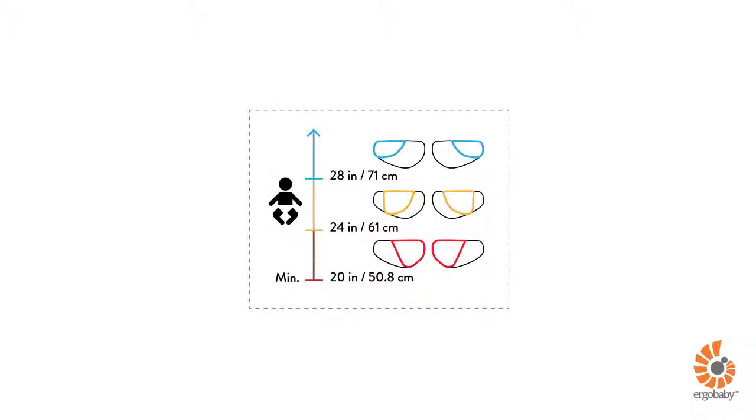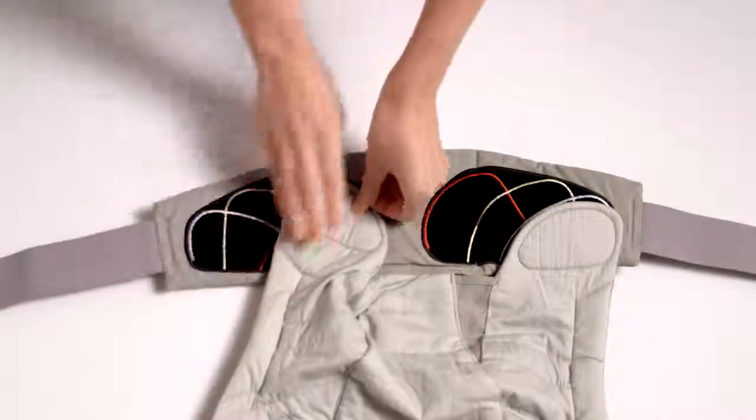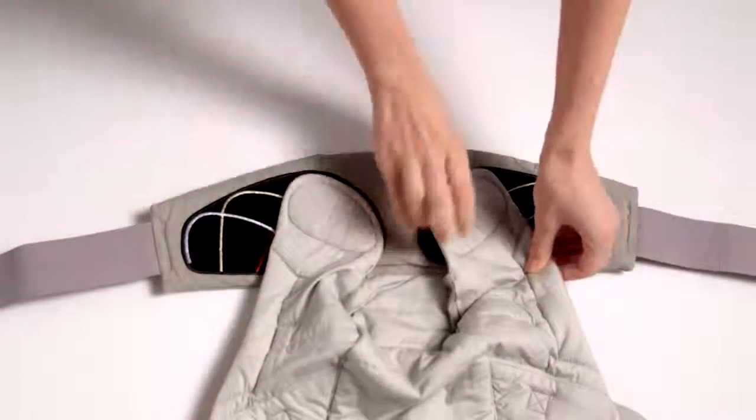You can refer to the instruction label on your carrier waist belt for how you need to adapt the seat based on your baby's height. You will start by positioning the velcro tabs following the red lines for your newborn baby.